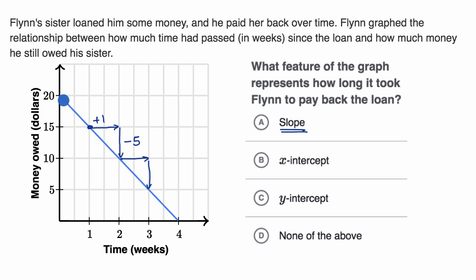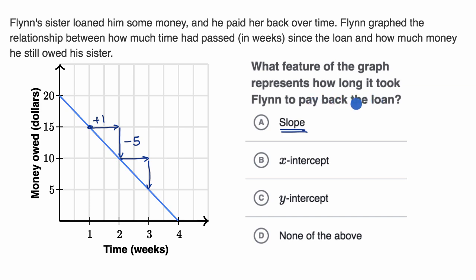That rate would be constant over the course of the entire time period — that's what makes this a line, because the slope is always constant. So the slope is useful for the rate at which the loan is being paid back, but it's not the clearest way to figure out how long it took Flynn to pay back the loan. So I would rule that one out.